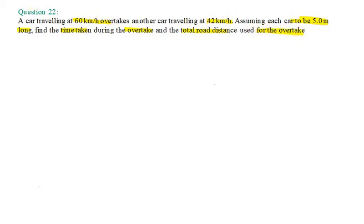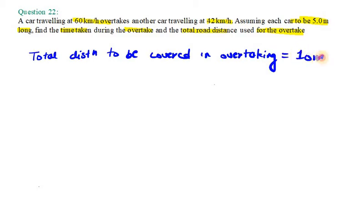So first of all, the total distance to be covered in overtaking is 10 meters. What we will write here is that the total distance to be covered in overtaking is equal to the length of both cars. So it will be 10 meters here.